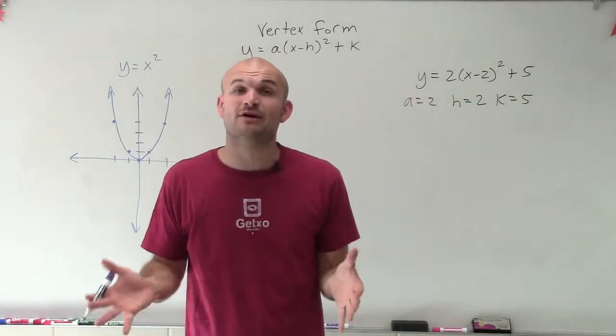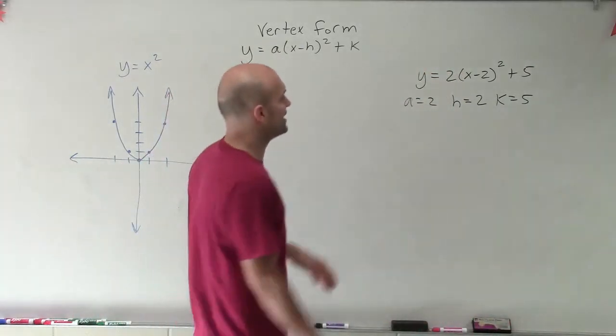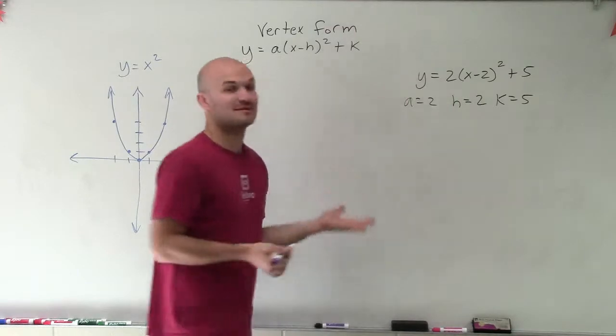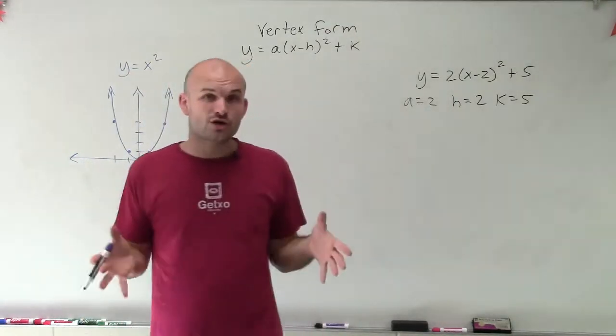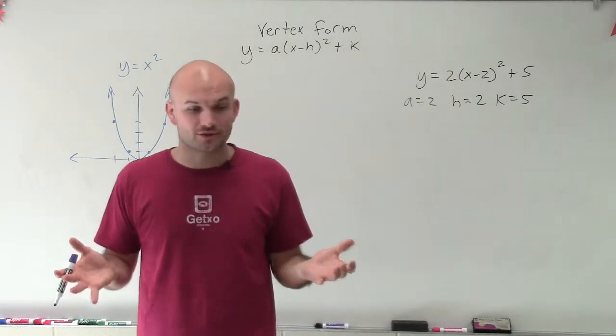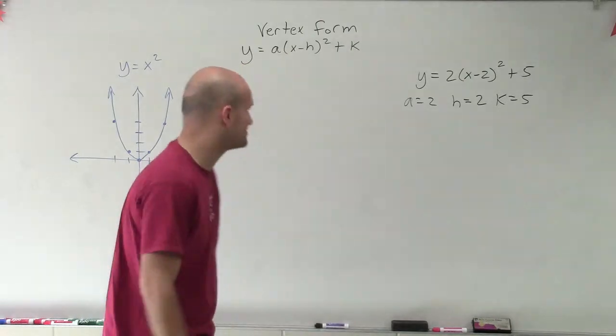So now we know h equals 2. That means I'm going to be shifting my graph two units to the right. All right, k is going to be positive 5. That means I'm going to shift my graph five units up. And then since a is 2, I'm not going to have a reflection. But now what that's going to do is that's going to horizontally stretch my graph and kind of make it a little bit skinnier.